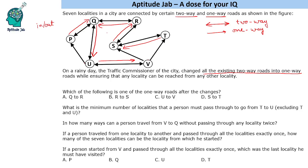This is the network diagram that is possible. Now let us answer the questions. Question: which of the following is one of the one-way roads after the changes? Q to R? No, it is the other way — R to Q. R to S? No, it is S to R. U to V? Yes, it is U to V. So U to V is the answer.